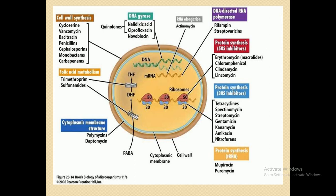These antibiotics are called cell wall synthesis inhibitors because they block the production of certain substances essential to the bacterial cell wall. They cause inhibition through the process of transpeptidation, effectively blocking and destroying the cell wall structure.